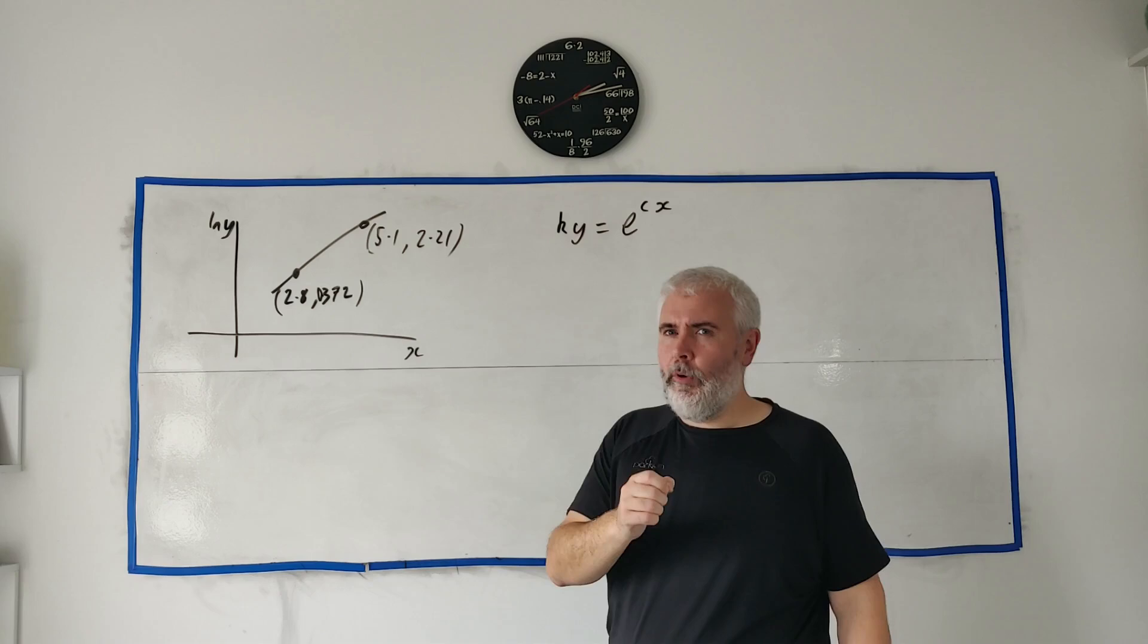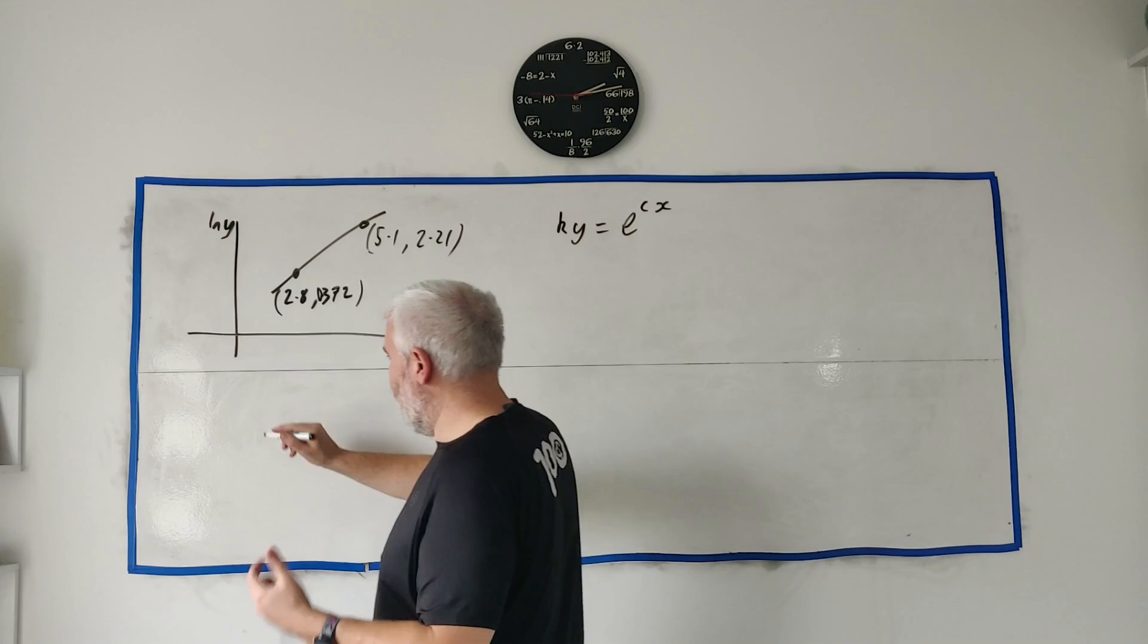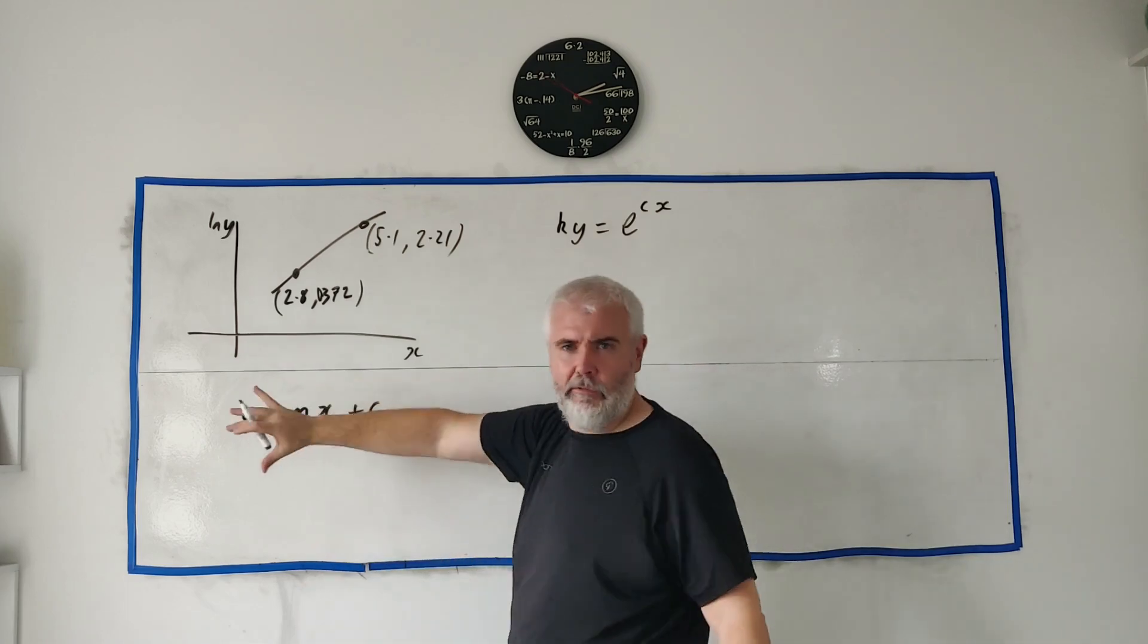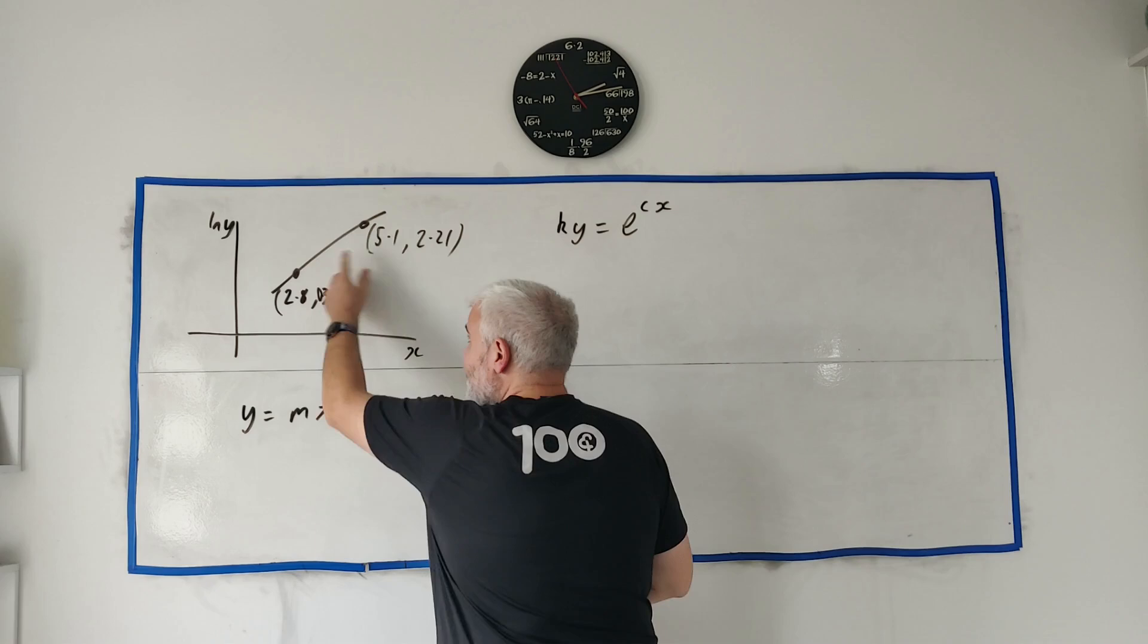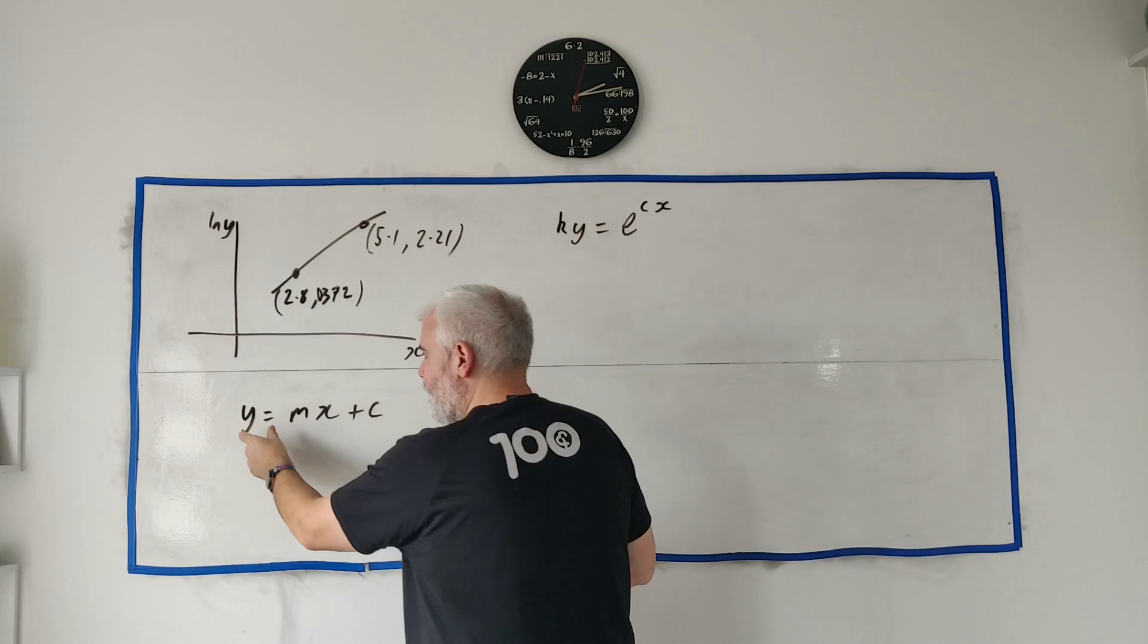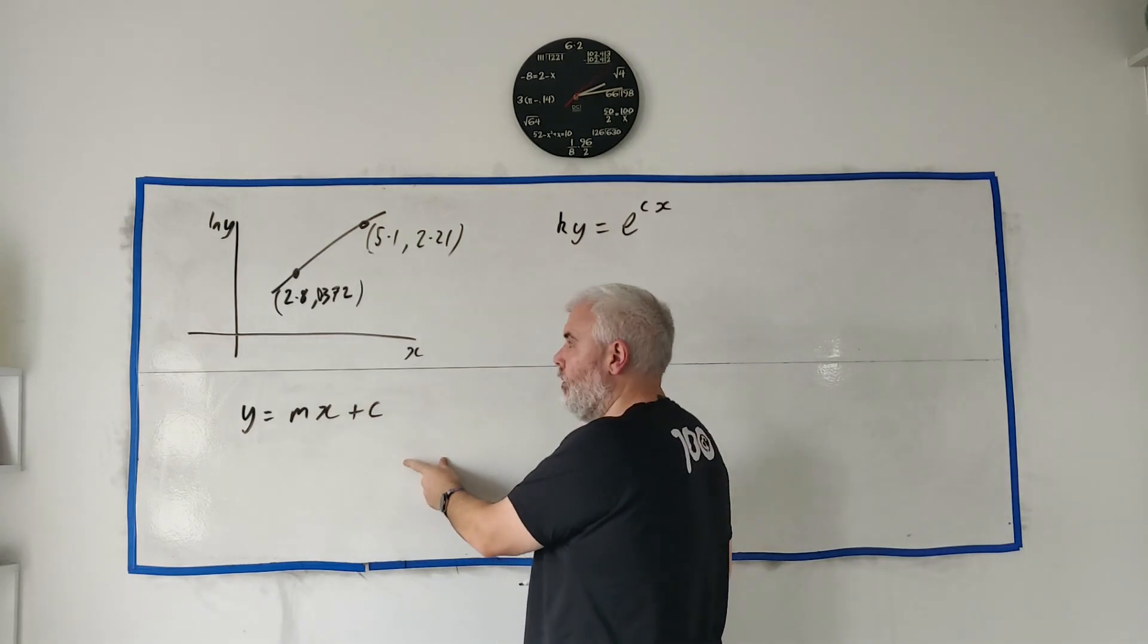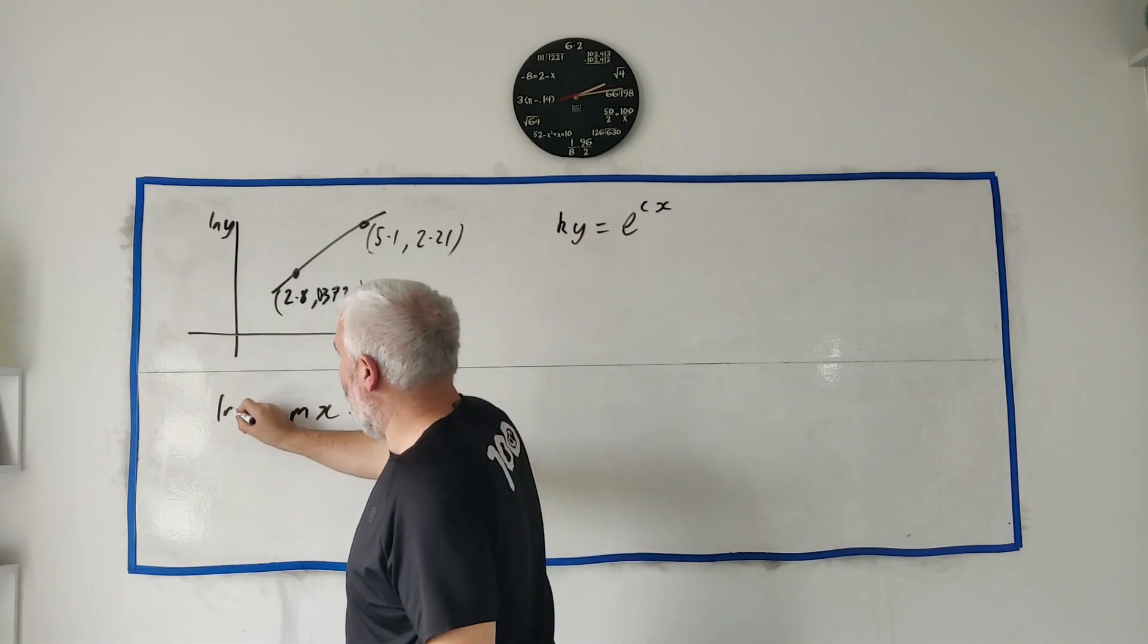We know what a straight line looks like, we know what the formula of a straight line looks like. Even more important, we know how to get the slope of a straight line. Let me write the formula of a straight line—you probably think of it as y equals mx plus c. Different c by the way. What the equation of a line should say is the y-axis equals m times the x-axis plus c.